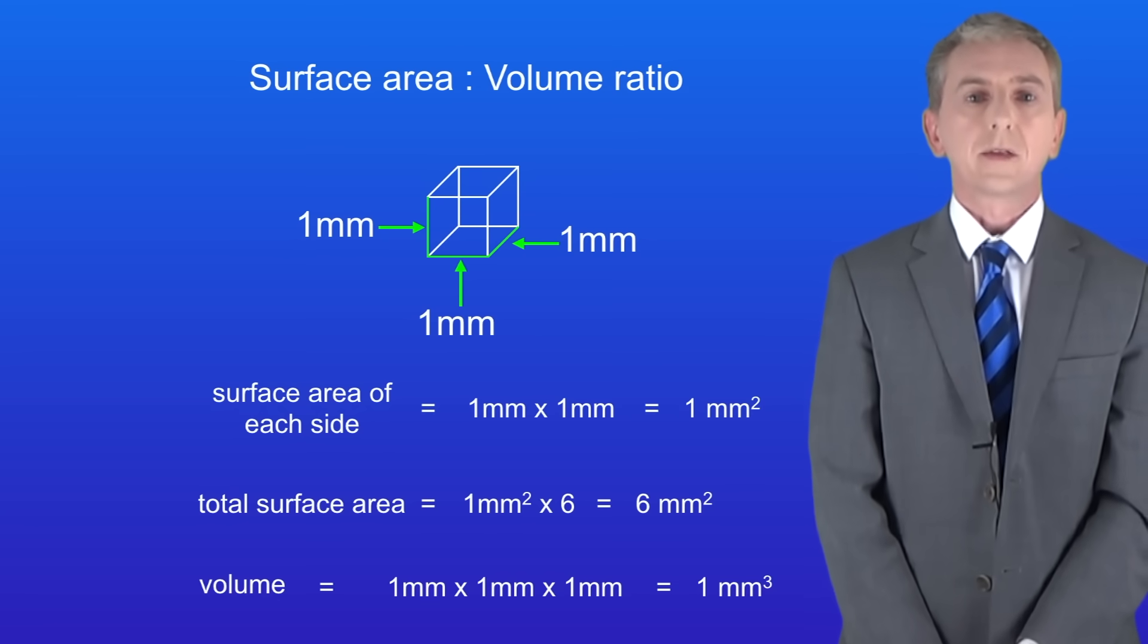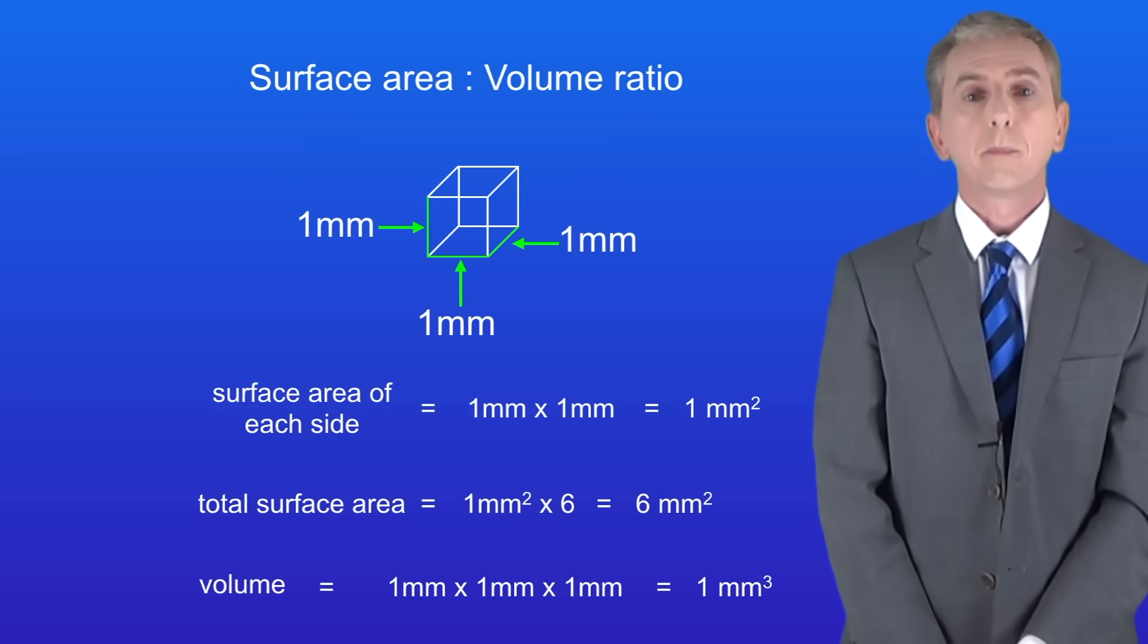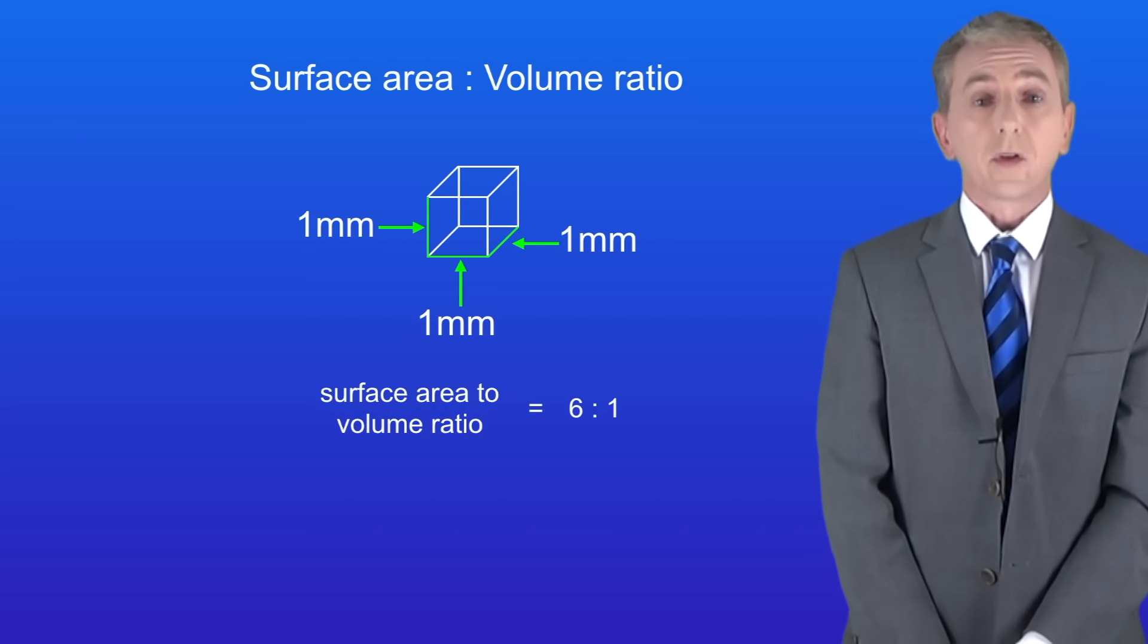The volume is one millimetre multiplied by one millimetre multiplied by one millimetre. This gives us a volume of one cubic millimetre. So the ratio of the surface area to the volume is six to one.